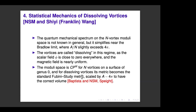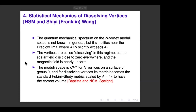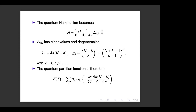It's not the standard unit-scale Fubini-Study metric; you must scale it by (A − 4πN). As A approaches 4πN, this Fubini-Study metric collapses to a point. The quantum Hamiltonian is (ħ²/2) times the Fubini-Study Laplacian, divided by the scale factor (A−4πN).